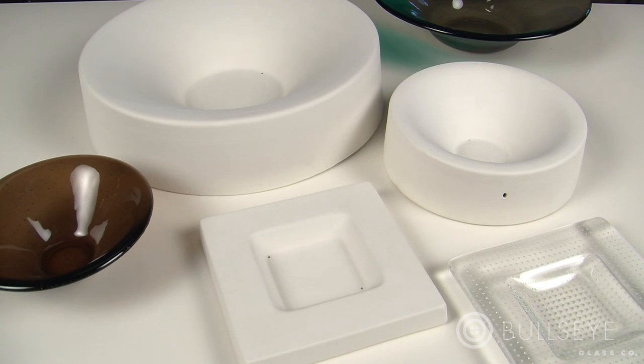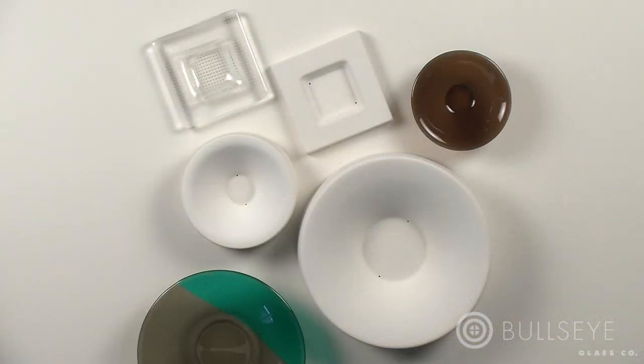Steep-sided molds and molds with recessed details need more frequent re-preparation. Glass pulls minute amounts of primer as it moves across these surfaces. Such forms are often fired to higher process temperatures with longer hold times, which also disturbs primer.